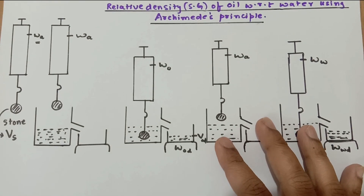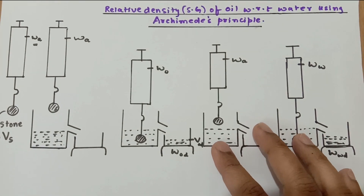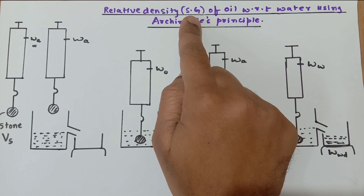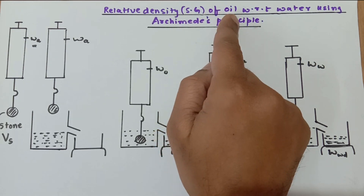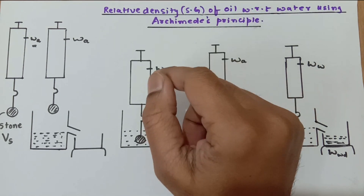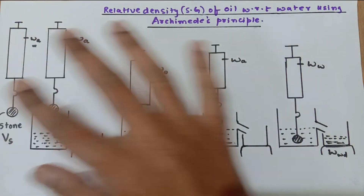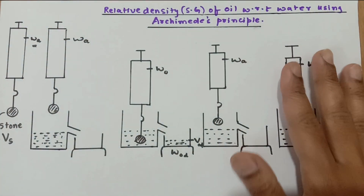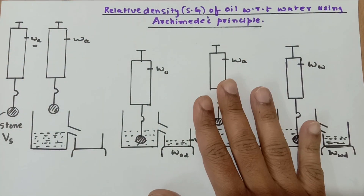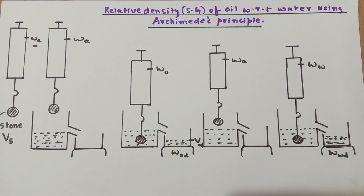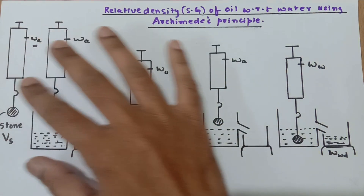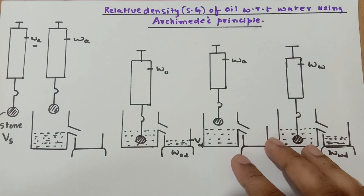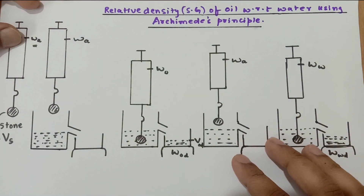In this video lecture we are going to derive an expression for the relative density or specific gravity of a liquid — taken here as oil — with respect to water, using Archimedes' principle. Basically this is an experiment, and the link to the experiment is given in the description. We are just going to understand the relative density expression here.